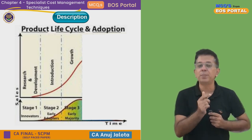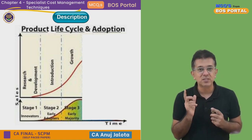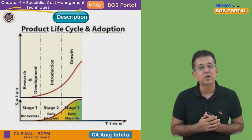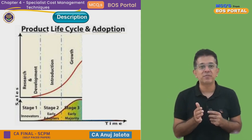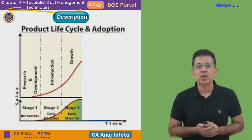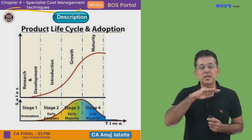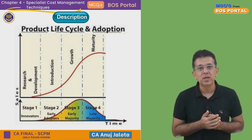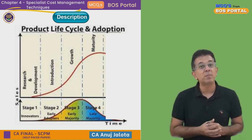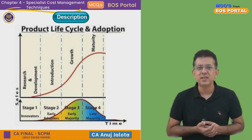At the growth stage, competition has also started to increase, because we launched a successful product, so more competitors will automatically start coming and manufacturing the same product. The next stage is the Maturity Stage. In the maturity stage, things start to become flat — markets have almost matured, there is no room for more competition, everybody is struggling for market share, and people try to launch many offers in order to sell their product.